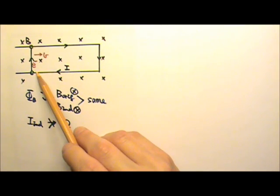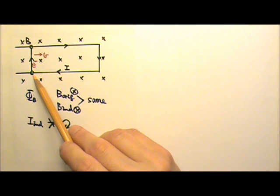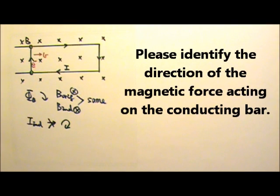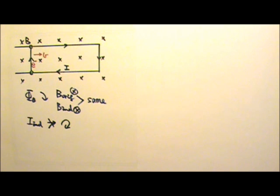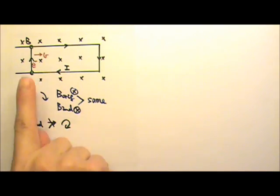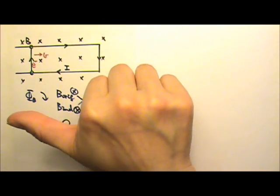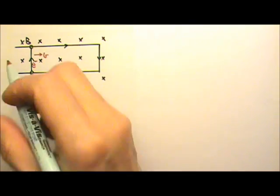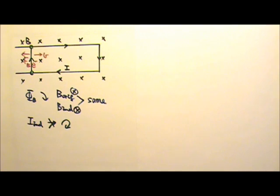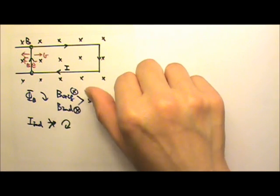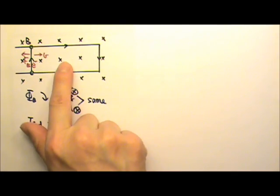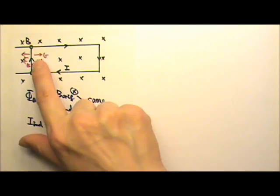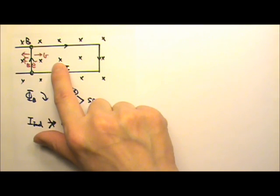What if we need the direction of the magnetic force on the conducting bar? The induced current in the bar goes up, and doing L cross B gives a magnetic force to the left. In fact, we could have predicted this without the right-hand rule: since the bar is pulled to the right and the flux changes, the person must encounter a magnetic resistance force directed to the left.